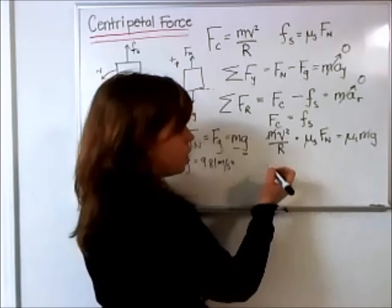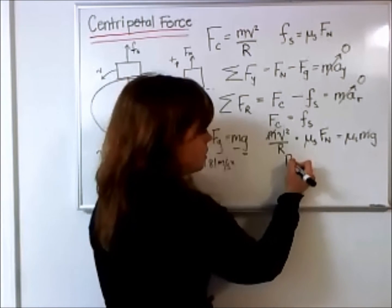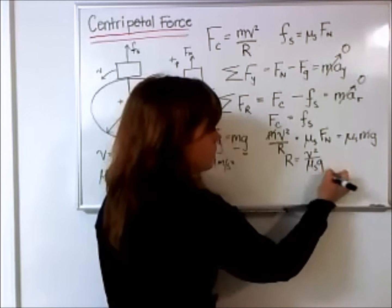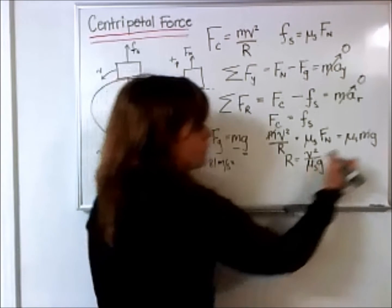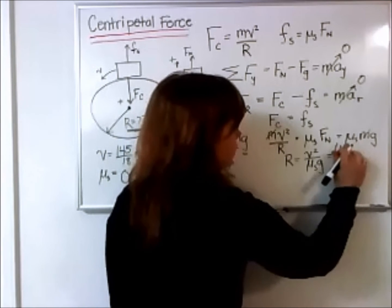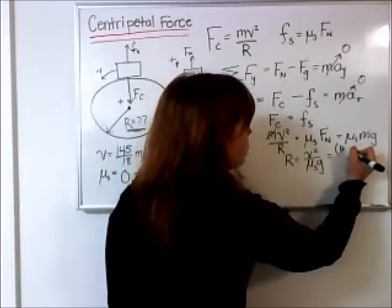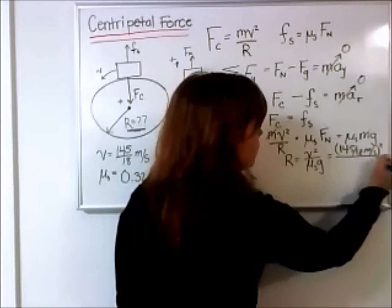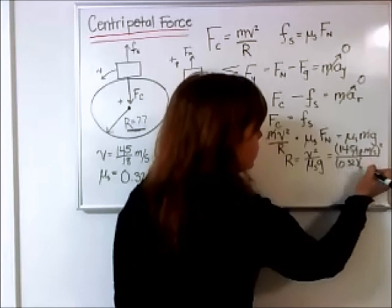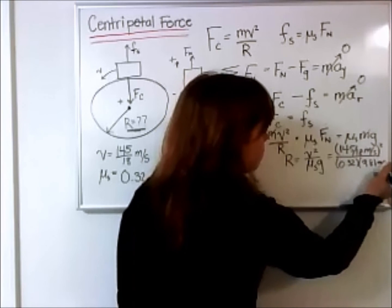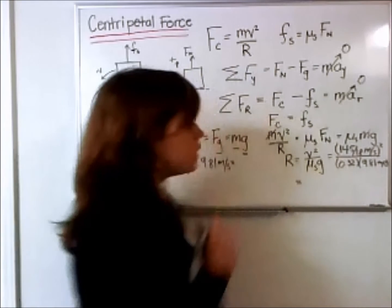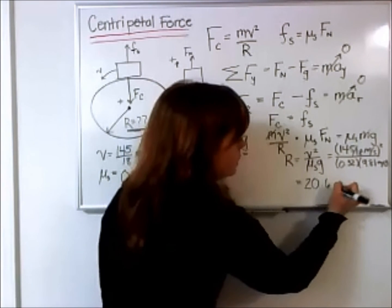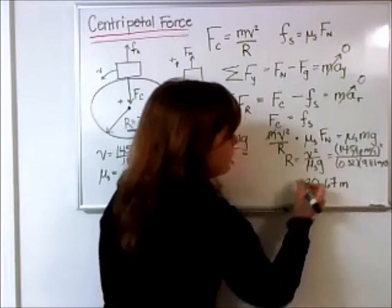I'm going to then solve for R. So I will get R equals V squared divided by mu s times G. And if I put in all my values for this and I plug that into my calculator, I will find that the minimum radius needs to be approximately 20.67 meters.